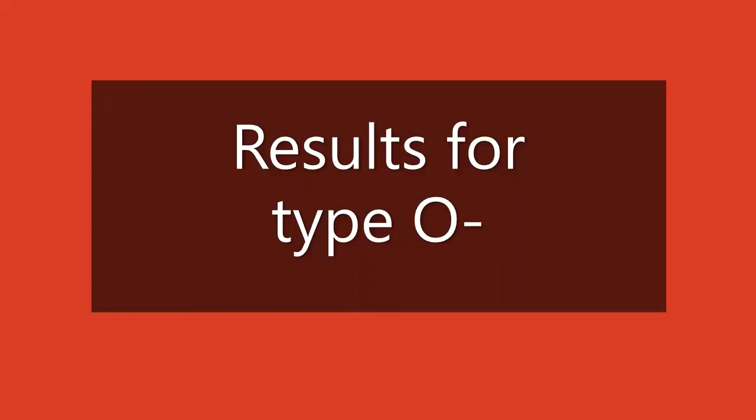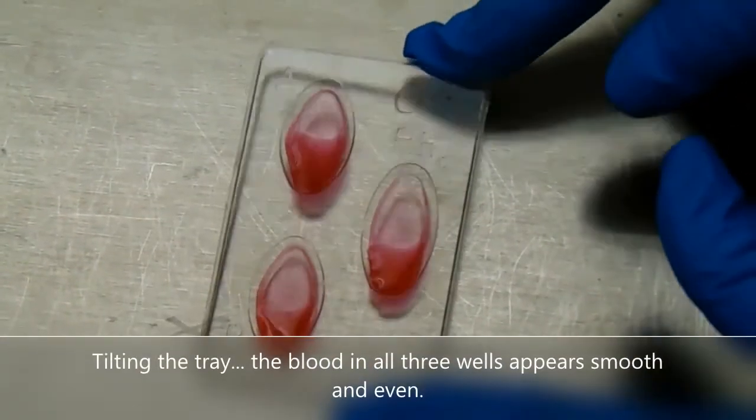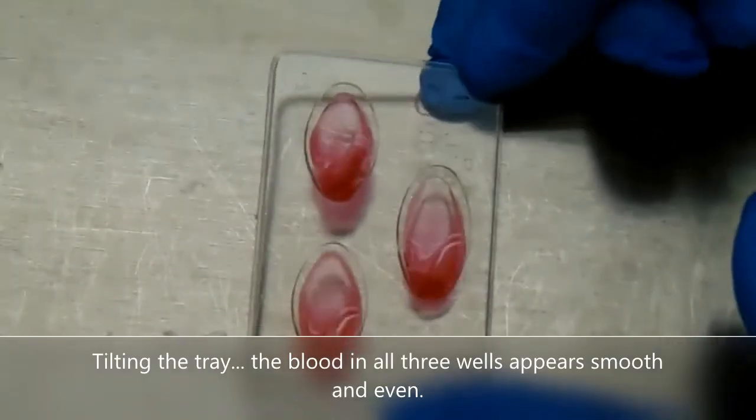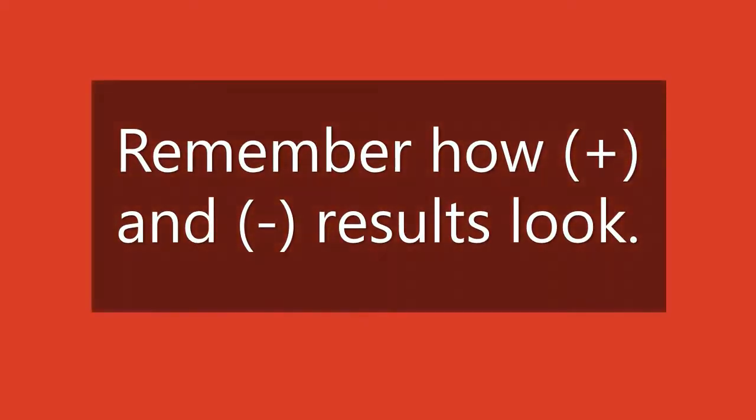Results for type O negative. Tilting the tray, the blood in all three wells appears smooth and even. Remember how positive and negative results look.